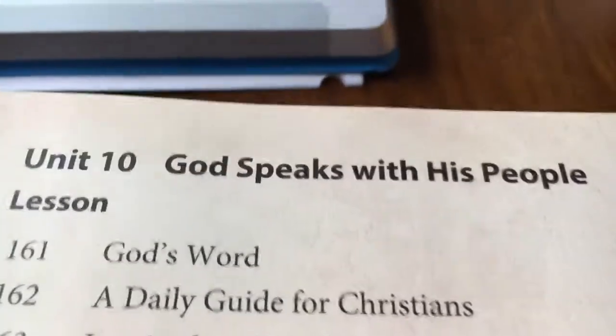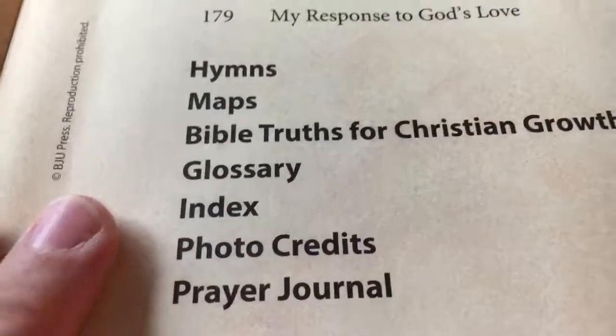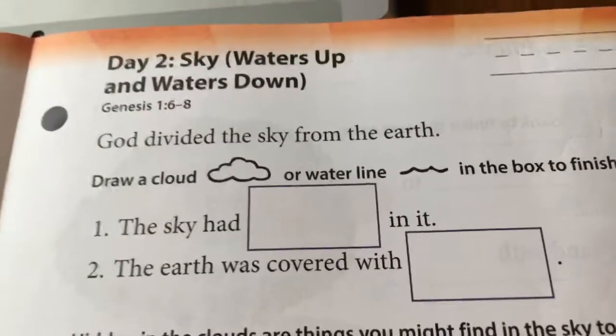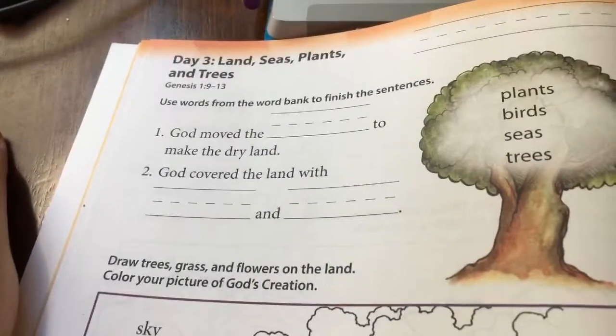Unit 10 is God speaks with his people, and then they have some hymns, maps, and a glossary in the back. I like the lessons because they're pretty simple. We just started today — this is like tomorrow's lesson — and it goes in the order of how God created the earth. It gives them a few blanks to fill in or draw something, then a color picture. Day three is about land, sea, plants, and trees, so each day they'll have a different lesson.